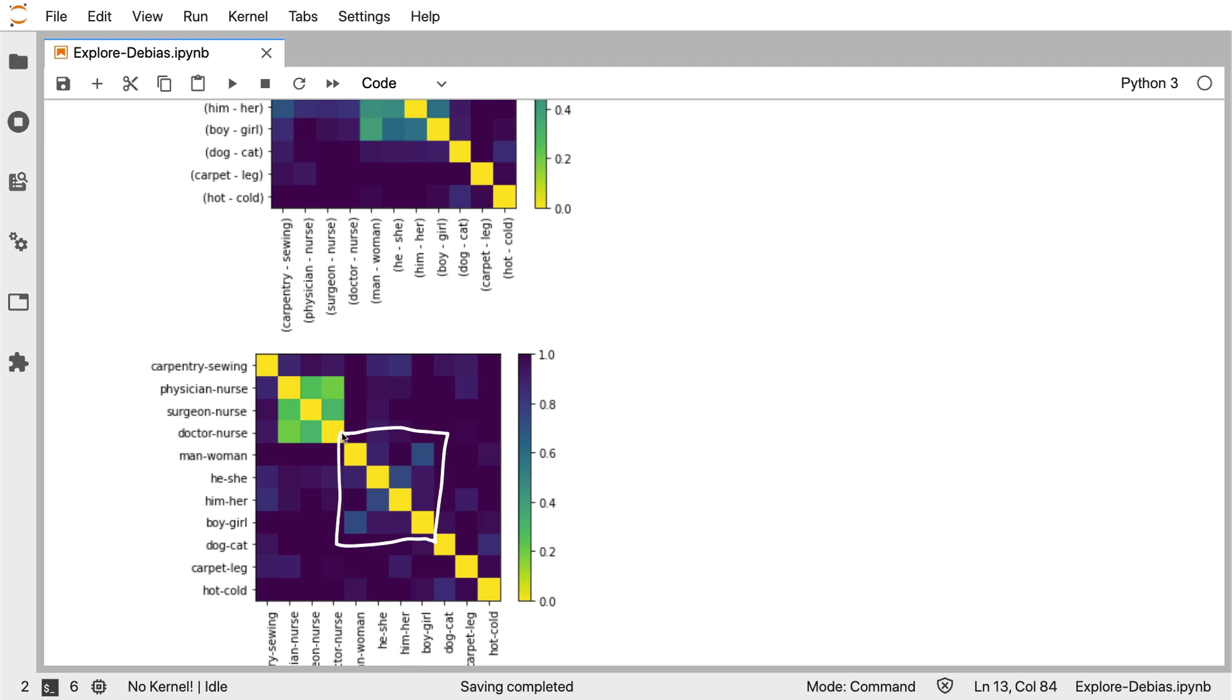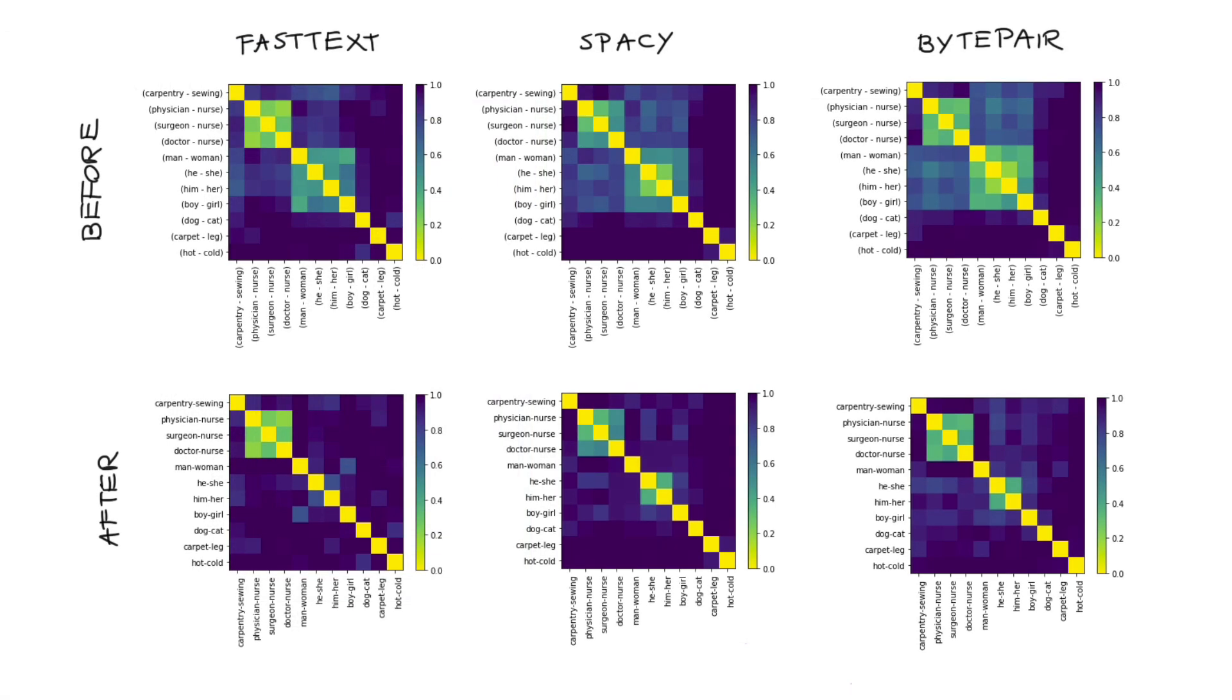But because we are filtering away gender information, we might also need to expect that a lot of information about the subtleties of man, woman, him, her, boy, girl is now also lost. And you could argue that that's a potential downside.